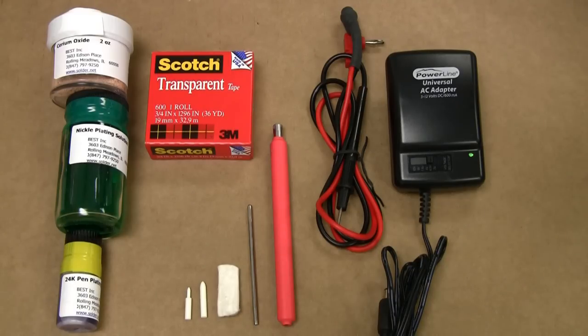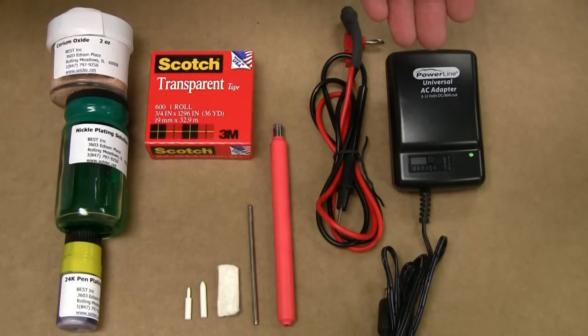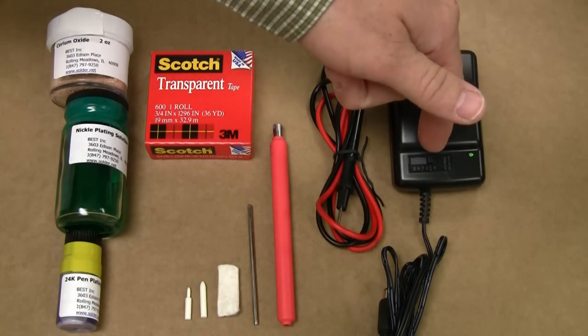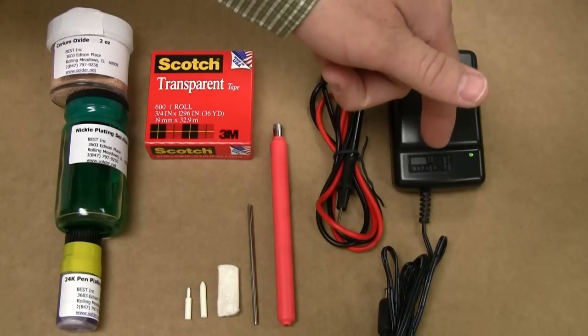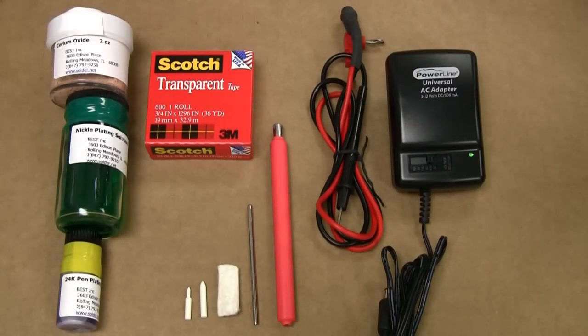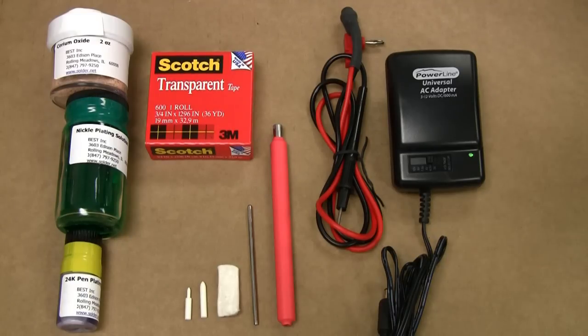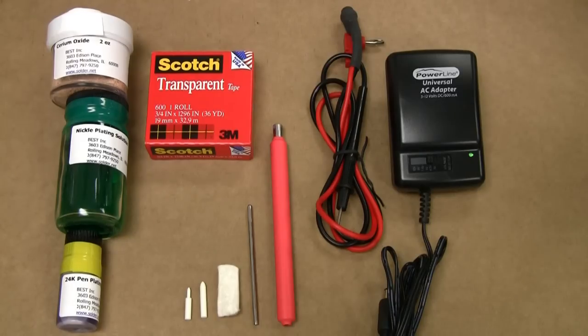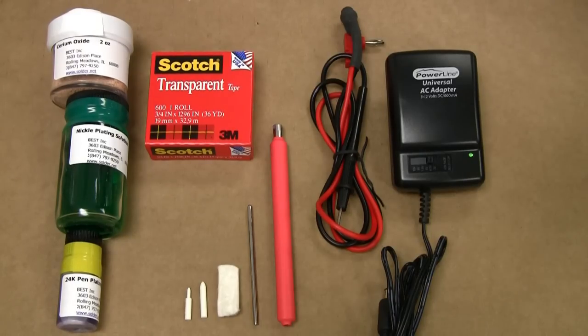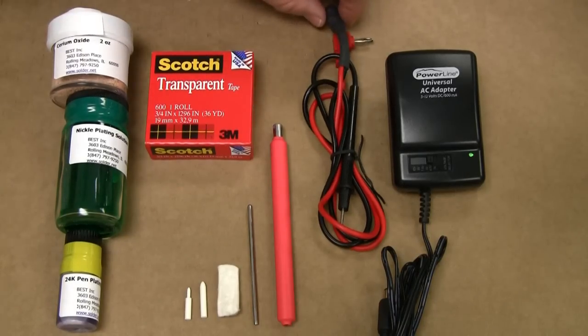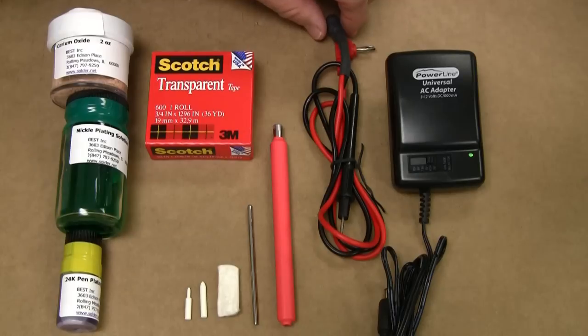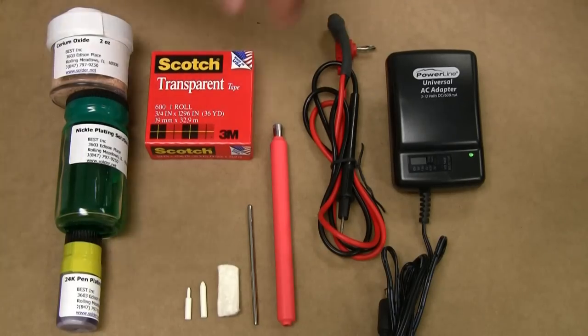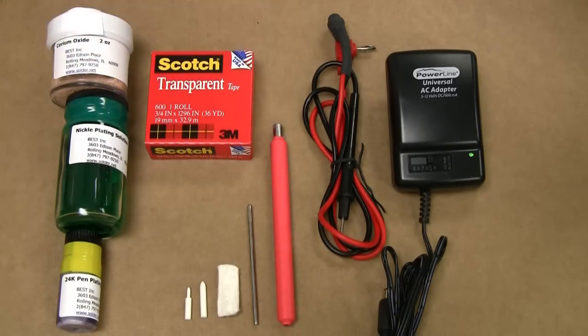First thing that you would see when you open it up is the power supply all the way here to the right, which is adjustable with different voltages. Now the voltage that I normally work with is around 4.5 volts and you would adjust it accordingly to get a good plating going on. You have the cables positive and negative, you got a wand right there.